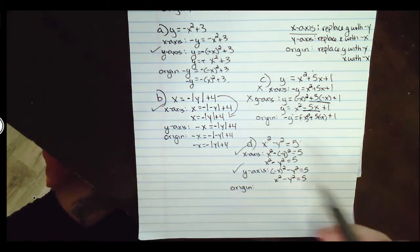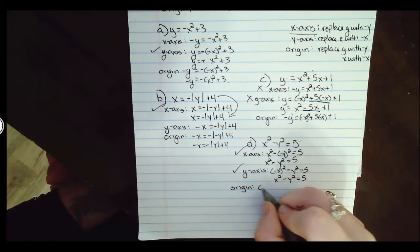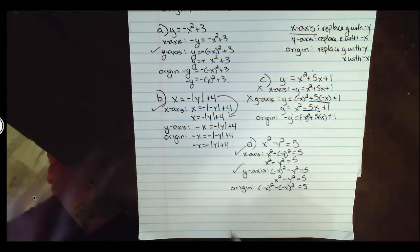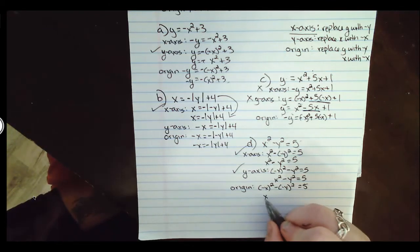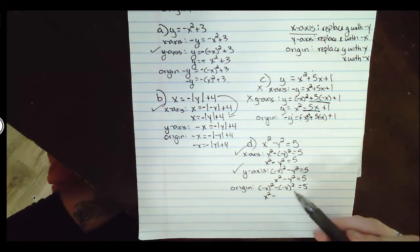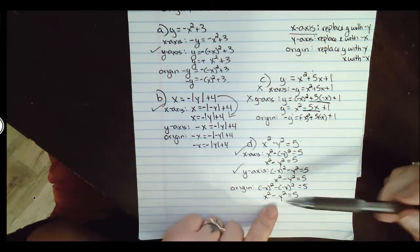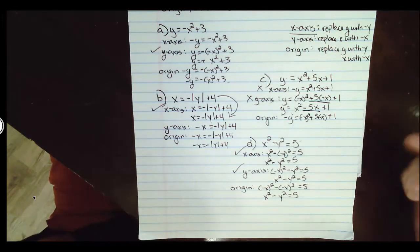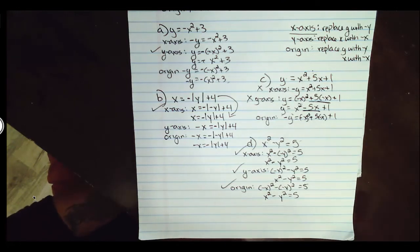Let's go ahead and check the origin. Since both x-axis and y-axis symmetry checked out, origin is more than likely going to check out as well. We replace x with negative x and y with negative y. Negative x times negative x is a positive x², and negative y times negative y is a positive y². So we're left with x² - y² = 5, which is the same as our original equation. Origin symmetry works. So for example D, x-axis, y-axis, and origin all checked out.